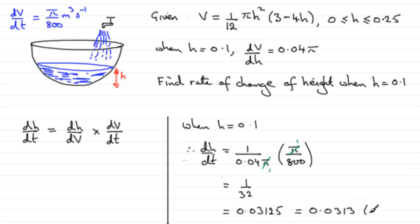And the units here as well would be useful, because we've got a rate of change of height with respect to time. So that's going to be the height, which is in meters. Time is in seconds, so it's meters per second. I would leave it as 1 over 32, though. You get the exact value that way.